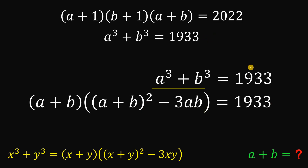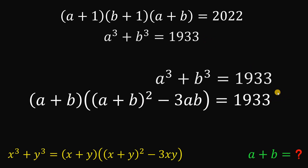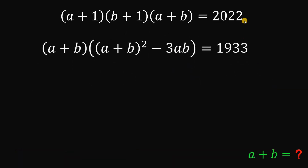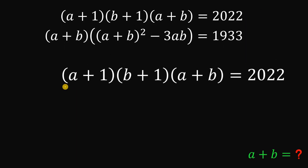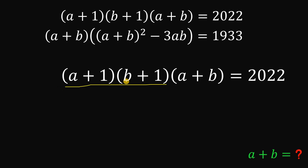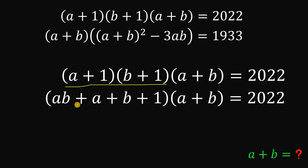Now let's replace the second equation with its factored form. For the first equation, we multiply out (a+1)(b+1), which gives ab + a + b + 1.